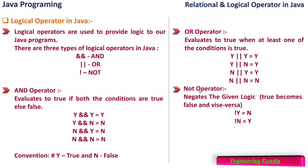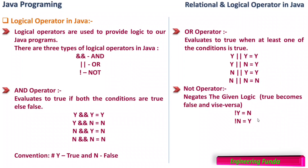The NOT operator negates the given logic: true becomes false and false becomes true. So NOT of true is false, and NOT of false is true.